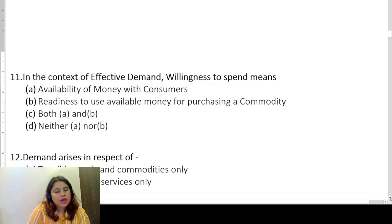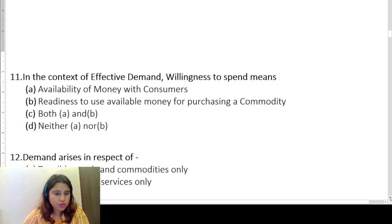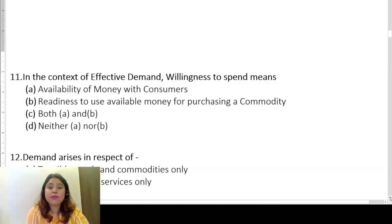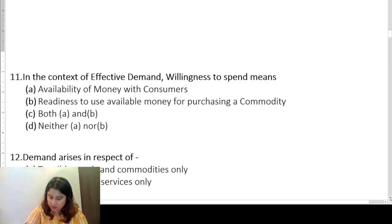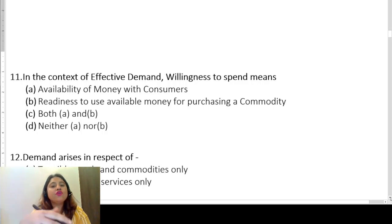Question eleven: in the context of effective demand, willingness to spend means — availability of money with consumers, or readiness to use available money for purchasing a commodity. This is a trick question. It is not just about availability of money — willingness means you are ready to use that available money to buy the product you desire. So the answer is readiness to use available money for purchasing a commodity.